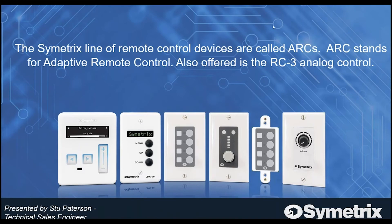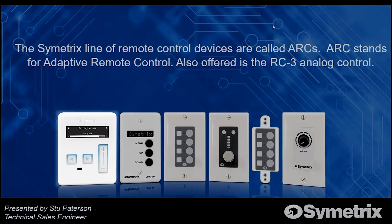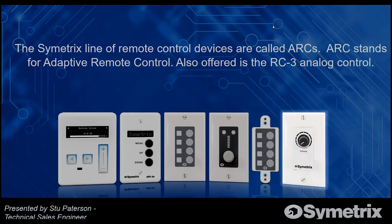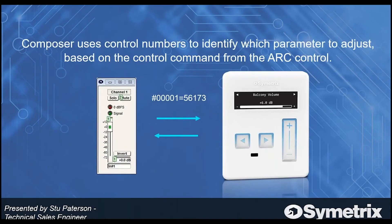We call them ARCs because ARC stands for Adaptive Remote Control. We also have an analog control on the far right. Going from left to right: on the far left is our ARC 3, our flagship unit. Next to that is our ARC 2e, then the SW4, then the K1E, and then our expander, the EX4E, which integrates with either the SW4 or the K1E. Last but not least, the analog control, the RC3, on the far right.